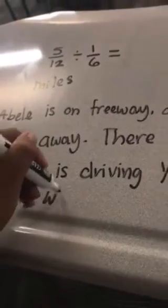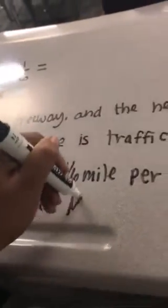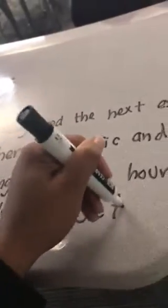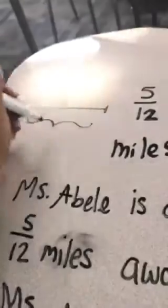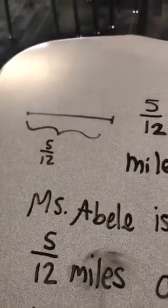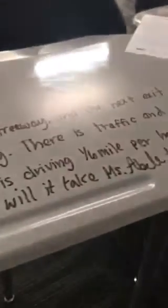So for every one hour I'm going really slow, and your job is to figure out how long it's going to take me to exit the freeway. The total distance from where I'm starting to where I'm going is five-twelfths, and you're trying to figure out how many one-sixths fit into five-twelfths. Since one-sixth is per hour, your answer is going to be in hours.